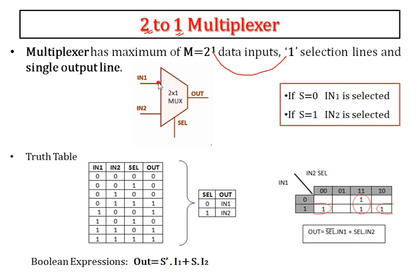This is the block diagram of the 2-to-1 multiplexer. I have considered 2 inputs, 1 selection line, and 1 output line. Consider: if my input to the selection line is 0, then it connects to input 1 and goes to the output line. So if my input is 0, it connects to input 1 — input 1 is selected and it goes to the output.